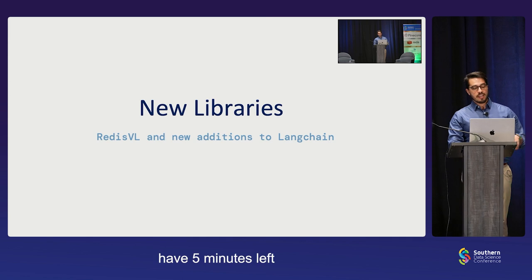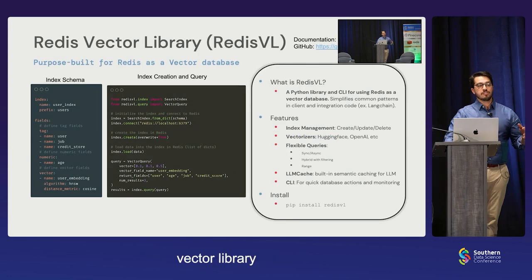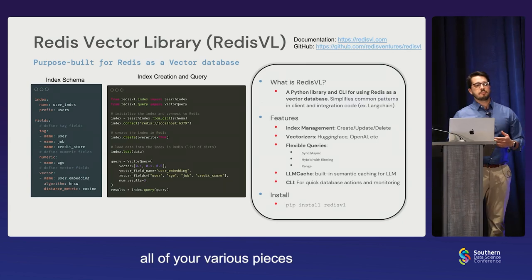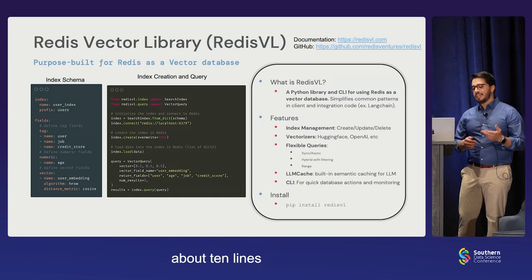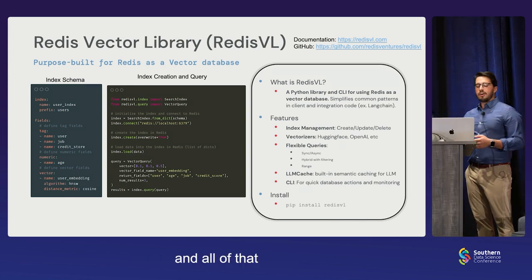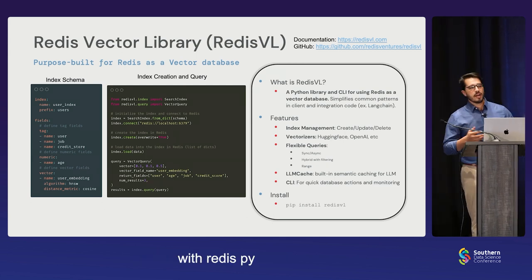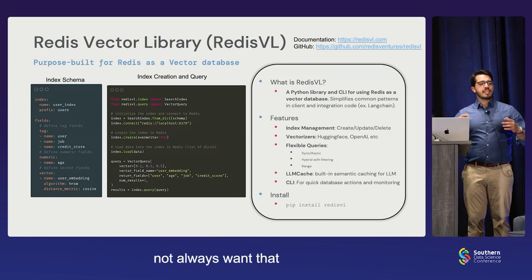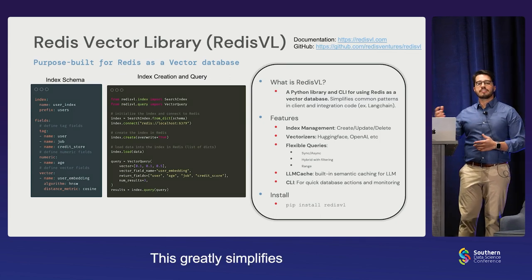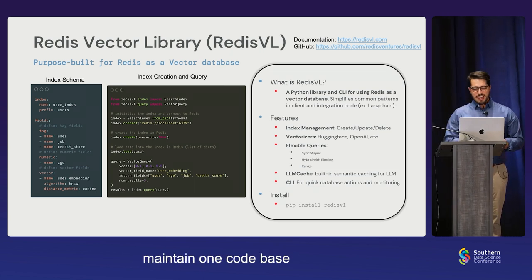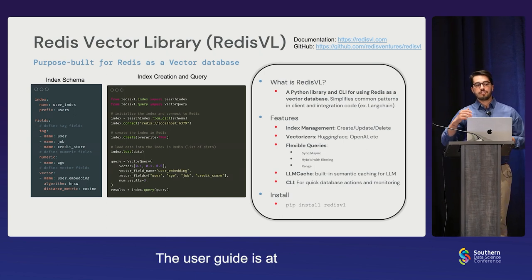The first new thing we're putting out is the Redis Vector Library — a purpose-built Python client library where you can define your index schema, all your metadata, and various pieces in a YAML file and pass it to about 10 lines of Python code. You can create, load vectors, have them vectorized for you, and start querying — all in about 10 lines of Python. We didn't just extend Redis Py because Redis has about 17 different data structures and can do a million things — this greatly simplifies the experience when you're just using a vector database. You can pip install this today; the user guide is at redisvl.com.